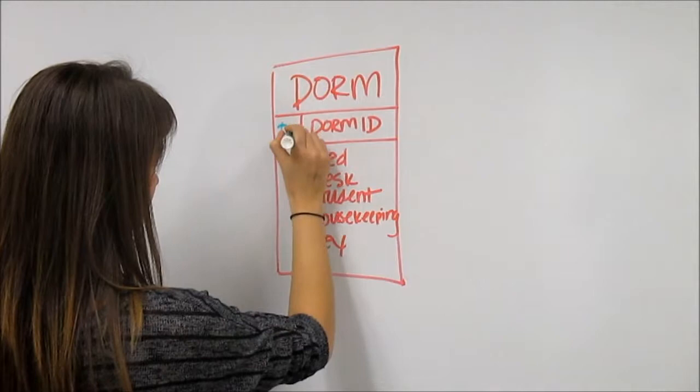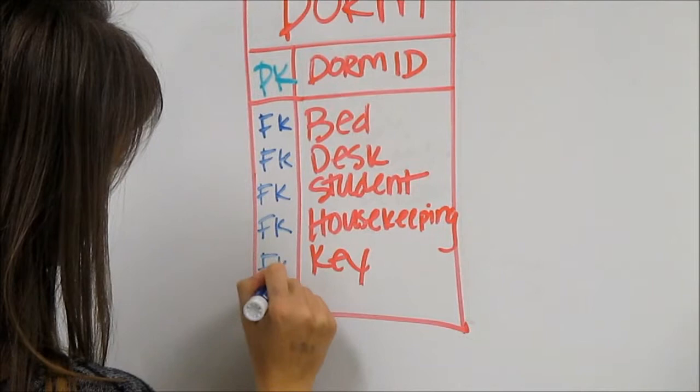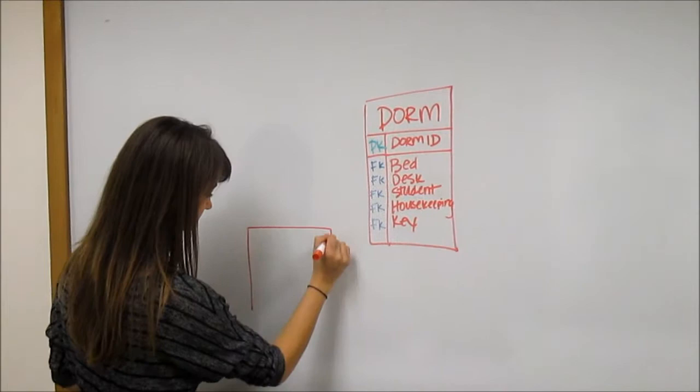To the left of the primary key, identify it with a PK. To the left of the attributes, write FK to represent foreign key, as these foreign keys will be tied to other entities and tables, as you will see continuing.